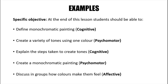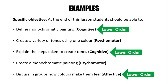Try to identify the lower order objectives and the higher order objectives based on the verbs. The lower order objectives have been identified — 'define monochromatic painting' is one where a student only needs to remember the definition. Another lower order objective is 'explain the steps taken to create tones,' which is slightly more complex but still lower order because of the verb 'explain.' Another lower order objective involves discussing in groups how colors make them feel, which deals with feelings and communicating.